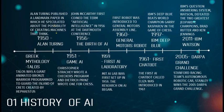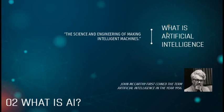In 2005, Stanford Racing Team's autonomous robot car called Stanley won the 2005 DARPA Grand Challenge. In 2011, IBM's question answering system, Watson, defeated the two greatest Jeopardy champions, Brad Rutter and Ken Jennings. So that's a brief history of AI.